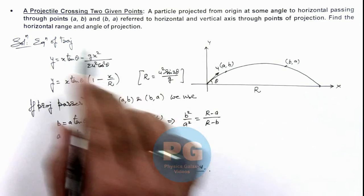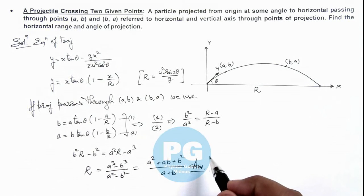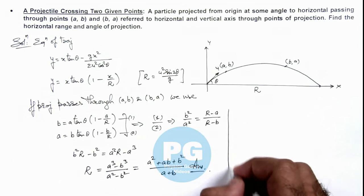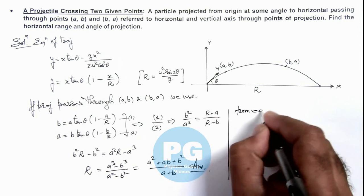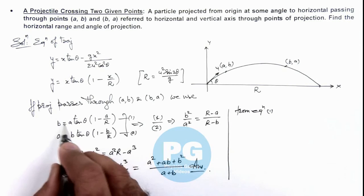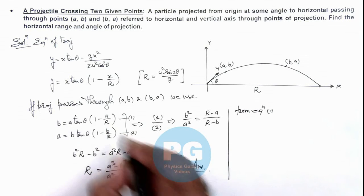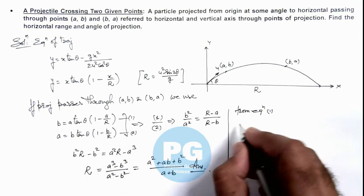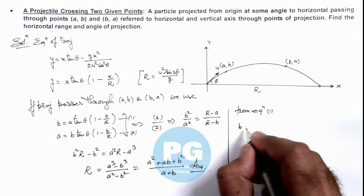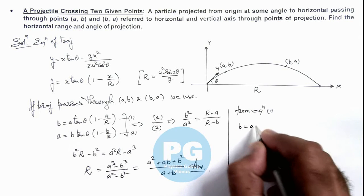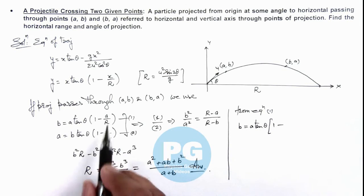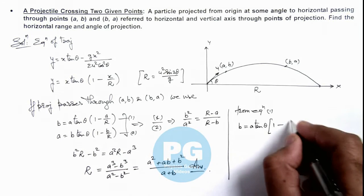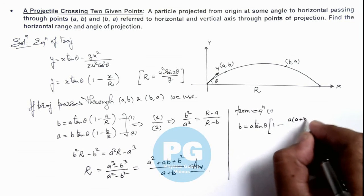And we are also required to find the angle of projection. So here you can see as we have got the value of R, here from equation 1 we can substitute the value of R over here. See what we'll get. This b is equal to a tan theta multiplied by 1 minus